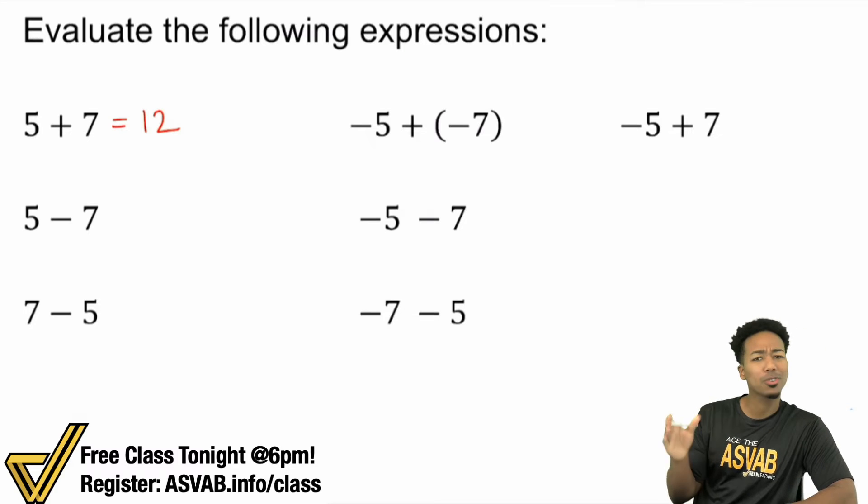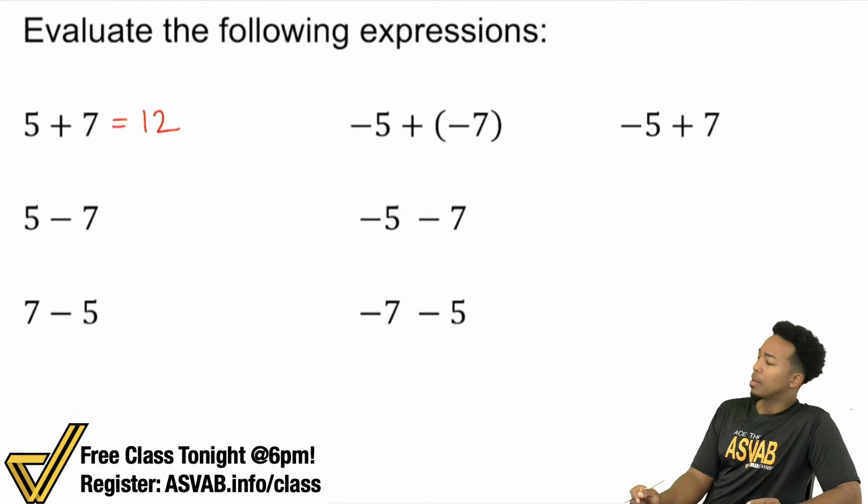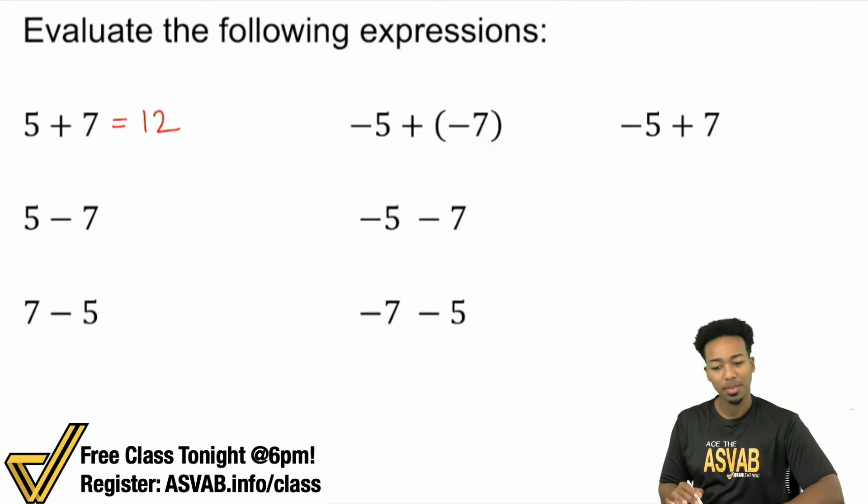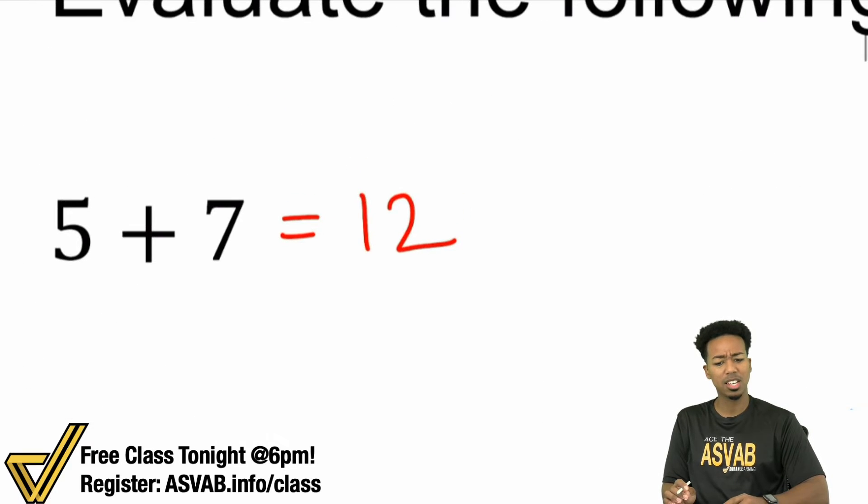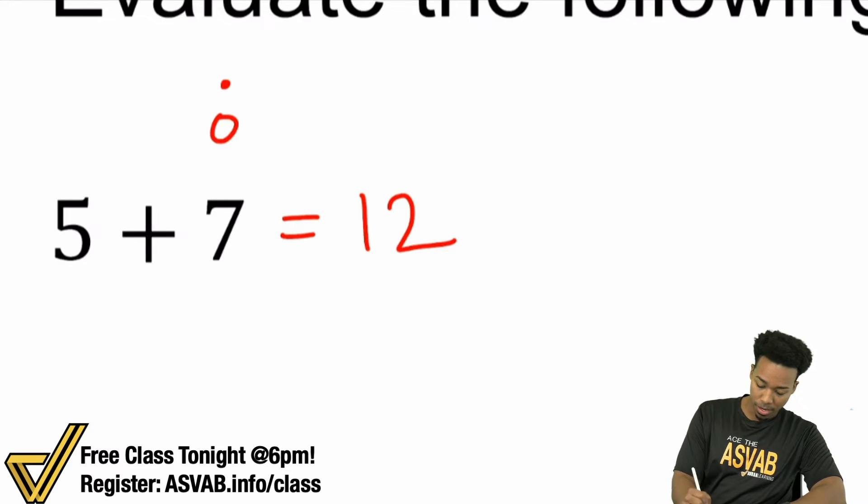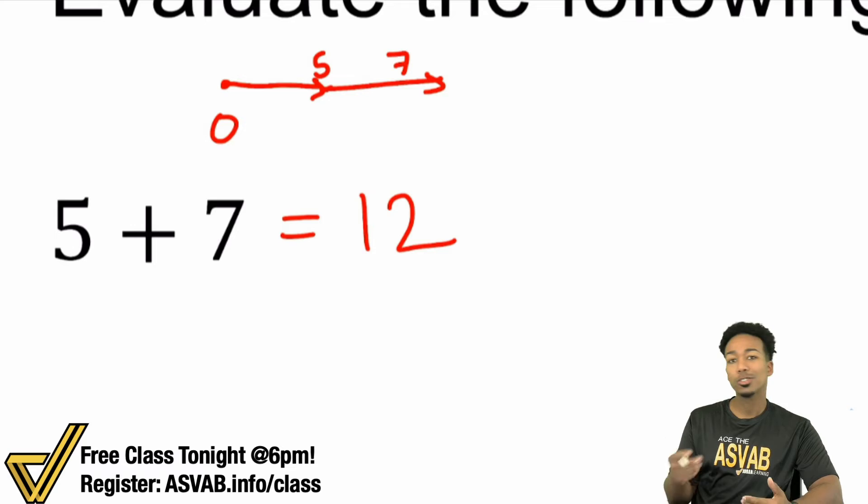I think we can all agree on that, nice and easy. But what happens when we start including those negatives like negative 5 plus negative 7? Let's just first take a look at 5 plus 7 and think about how this works. When it comes to 5 plus 7, you're basically saying if this is 0 right here, you're going forward by 5, then you're going forward 7 more. So if you think of it that way, then yeah, you're going to end up at 12.